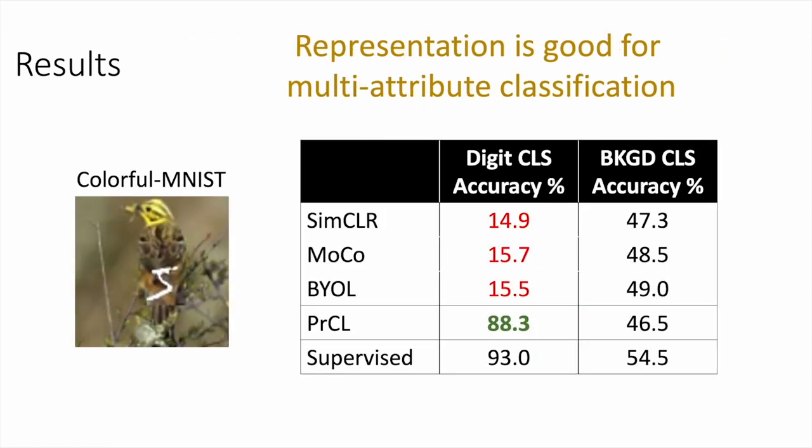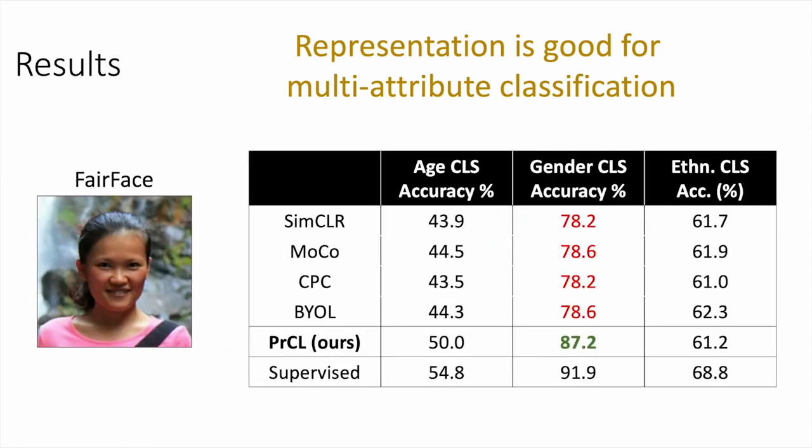For multi-attribute classification, PRCL can preserve information about different types of semantics. Therefore, for colorful MNIST, it can learn representations good for both digit and background. For FairFace, it can learn representation that achieves comparable performance as supervised learning on all tasks.